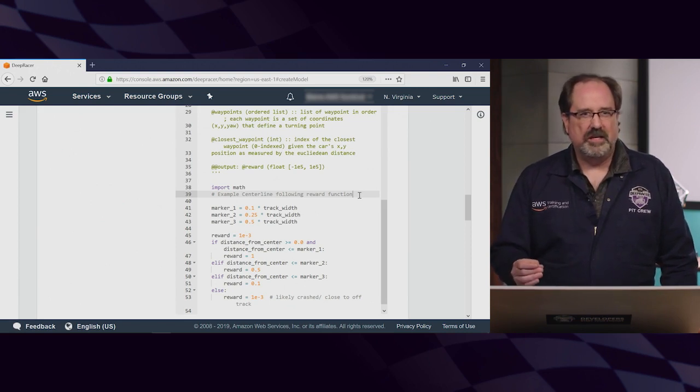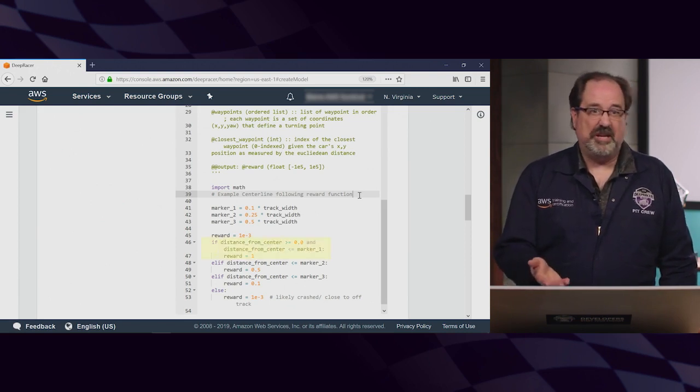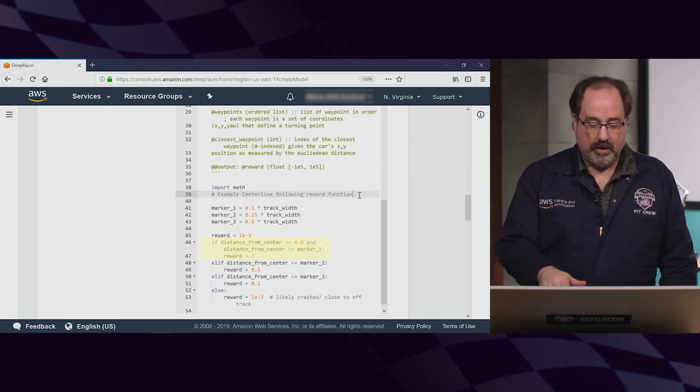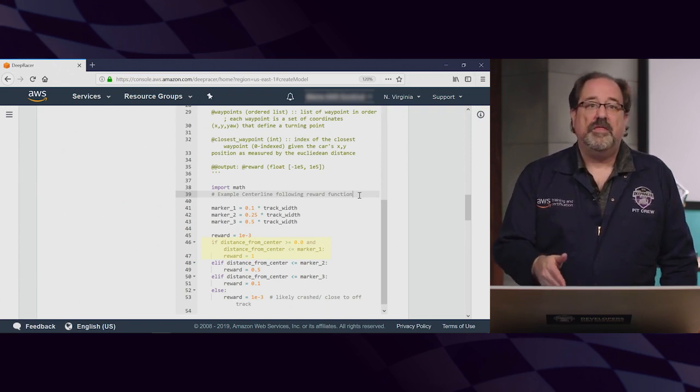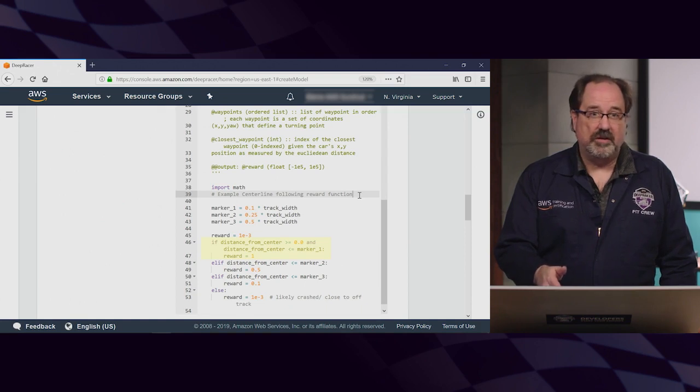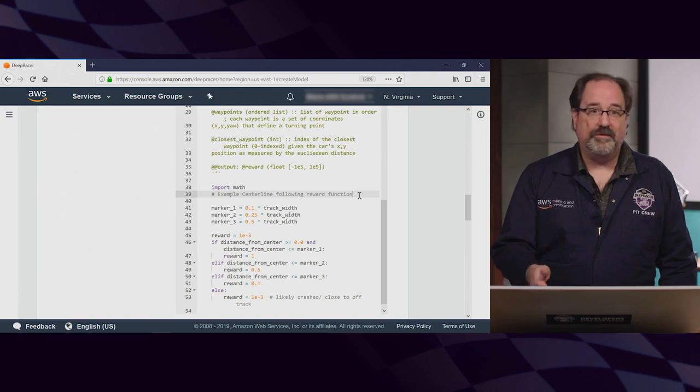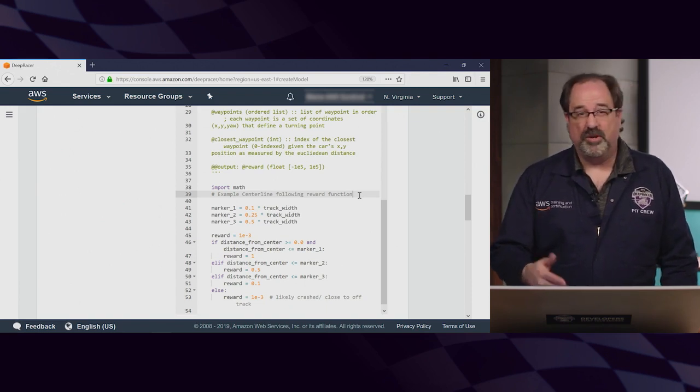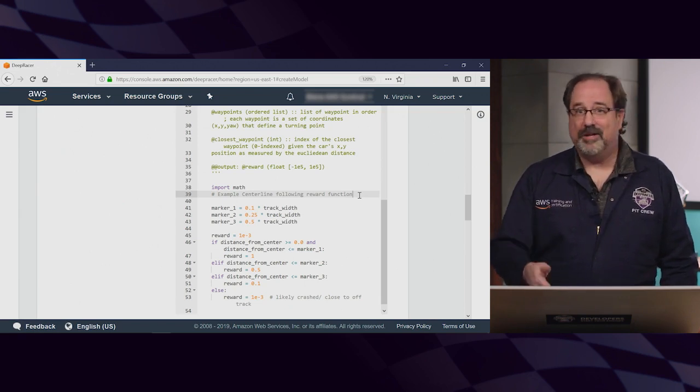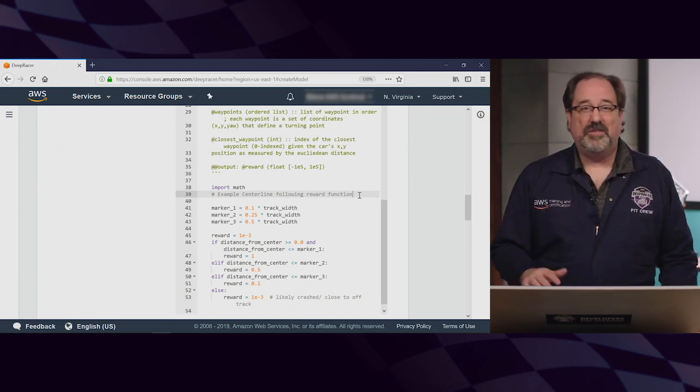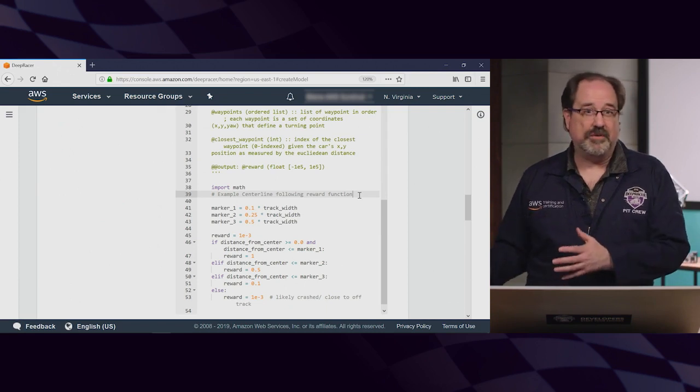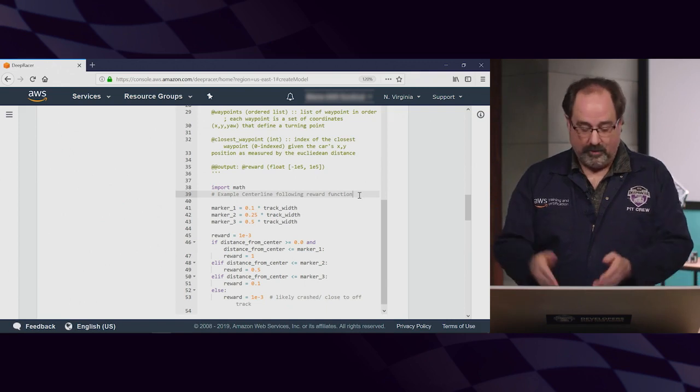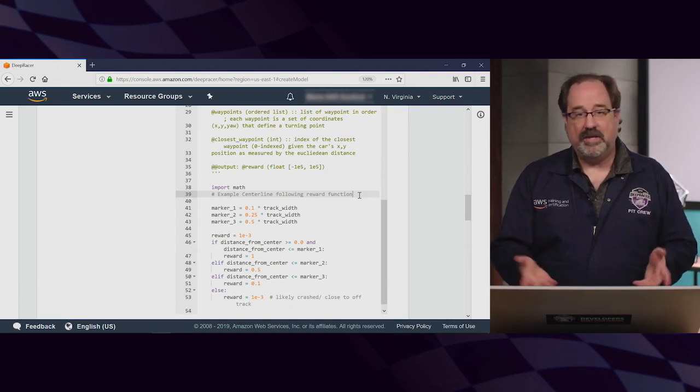The part of this function is basically just an if statement that's giving a reward of one if the car's distance from track center is within 20 percent of the track width, a reward of 0.5 if it's within 50 percent, 0.1 within 80 percent, and 0.001 if the distance is greater than 80 percent, which at that point, you've probably crashed or at least off the track. That reward is then returned at the end of this function.